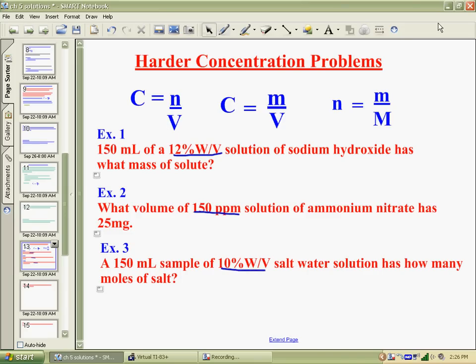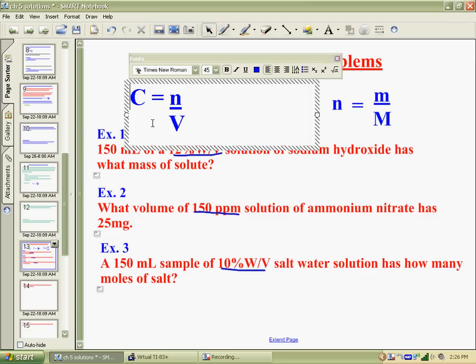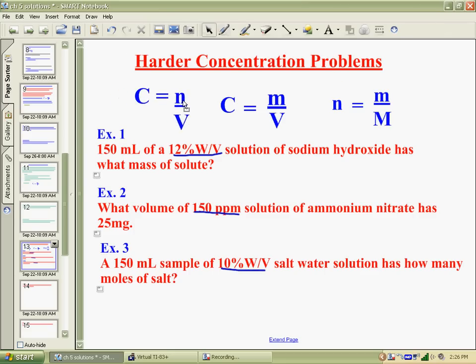So our concentration formulas we've seen in the past are either the concentration is in moles per liter, which is n over V for moles and liters. Or our other formula is concentrations where they have to be in mass over volume. The reason we needed mass over volume is percent W/V, you need to have your mass in grams and your volume in mils. And for a percentage, you'd multiply it by 100.